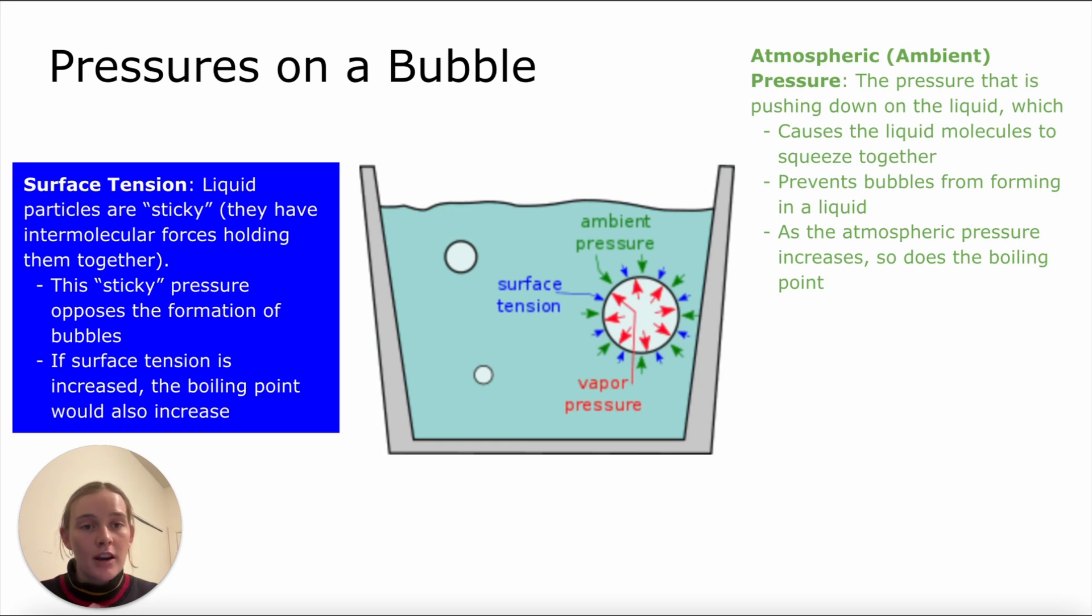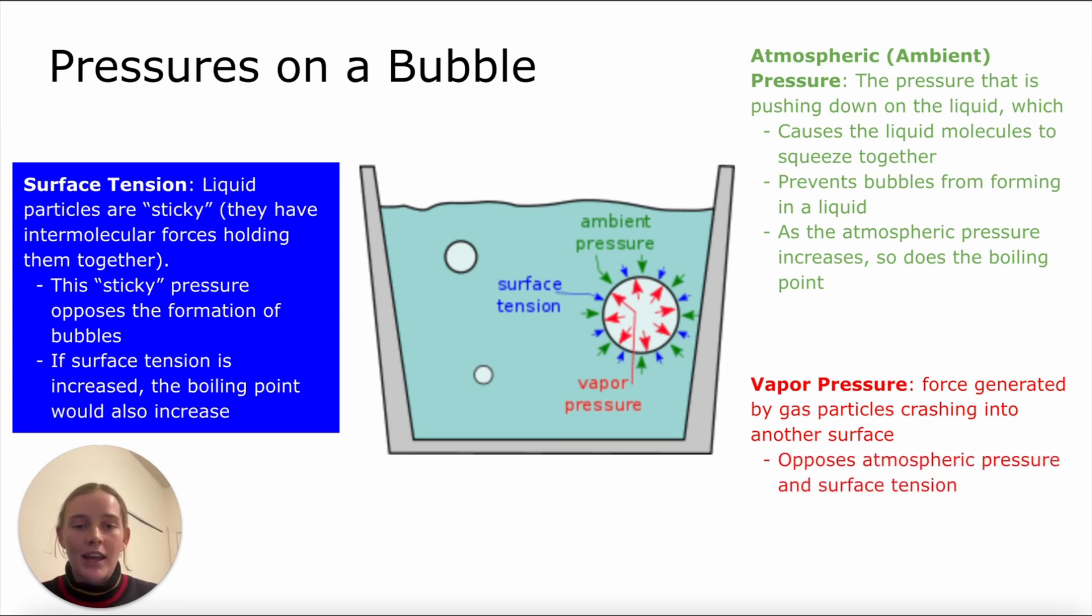The pressure that opposes these two forces is vapor pressure. It is generated by gas molecules crashing into one another and on a surface. It opposes the other two forces, atmospheric pressure and surface tension. Here, it's kind of opposite because it's going the opposite direction. If vapor pressure increases, boiling point is actually going to decrease. So we're going to need to input less energy in order to cause the liquid to boil.